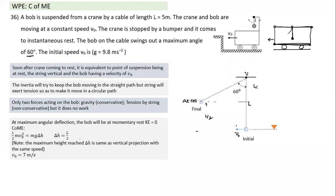Notice: if this initial velocity v₀ was given vertically upward instead of horizontally (as in the pendulum), the maximum height reached would be the same — L/2 = 2.5 m — because kinetic energy converts to potential energy regardless of the direction, though the path differs.